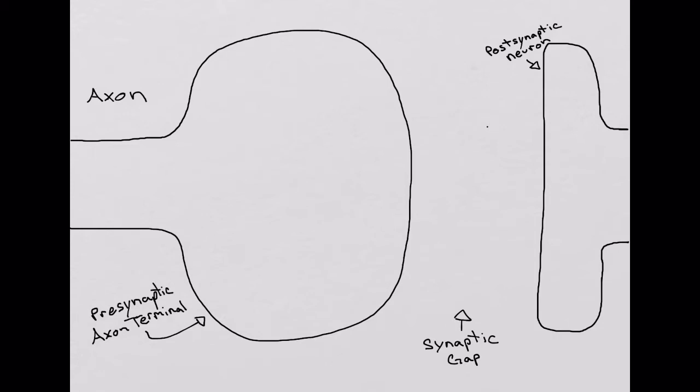And so in this area right here, we have our axon that leads from the cell body off to the left that leads into our presynaptic axon terminal. Over here on the right, we're going to have our postsynaptic neuron, which is basically going to be our effector cell.